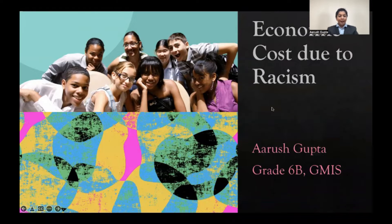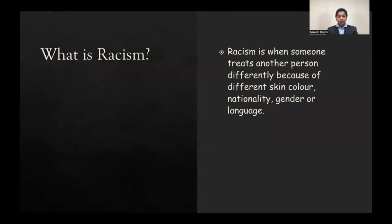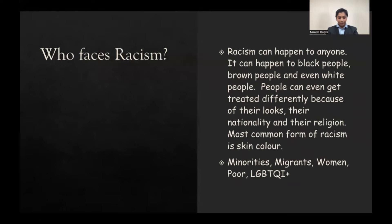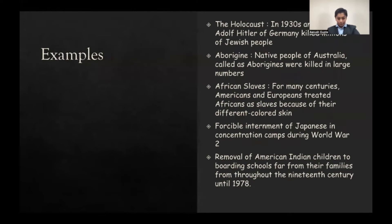Hello everyone, my name is Arush Gupta, and today I'm going to talk about the economic cost due to racism. Racism is when someone treats another person differently due to different skin color, nationality, language, or gender. It happens everywhere — in neighborhoods, shopping malls, offices, and countries all over the world. Some globally known examples include Adolf Hitler killing millions of Jewish people, aborigines killed in large numbers in Australia, African slaves in America and Europe, and the removal of American Indian children from families to boarding schools.